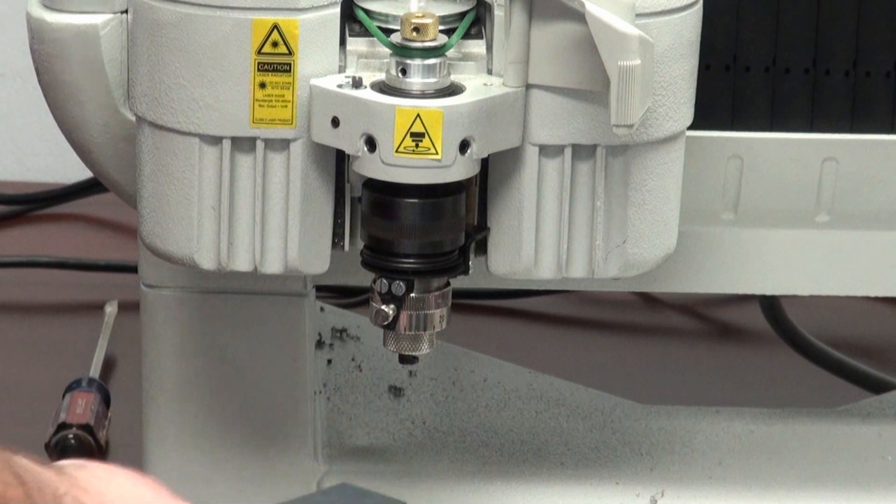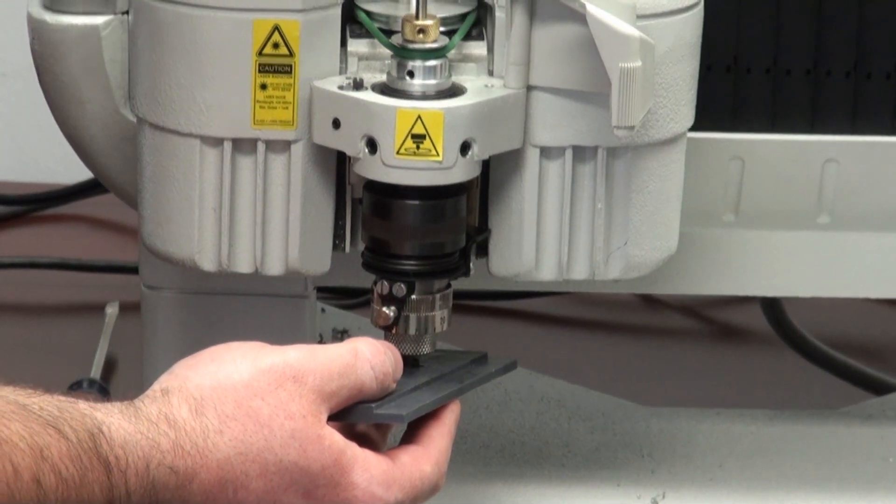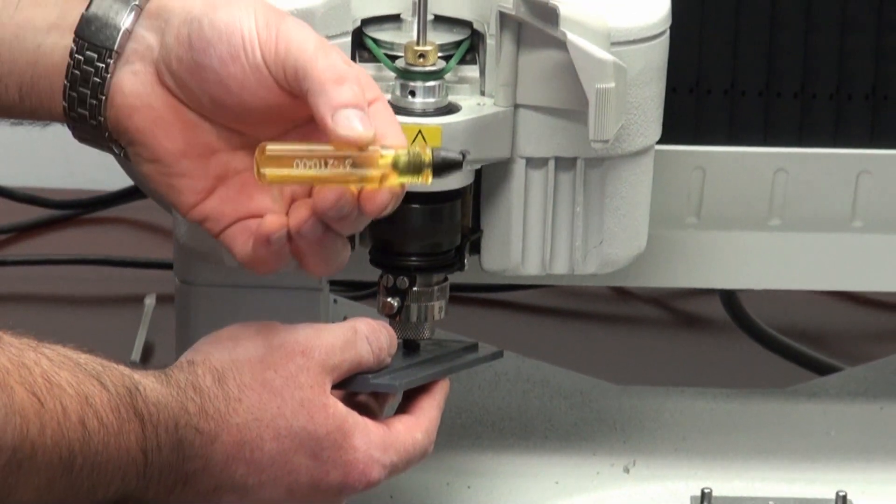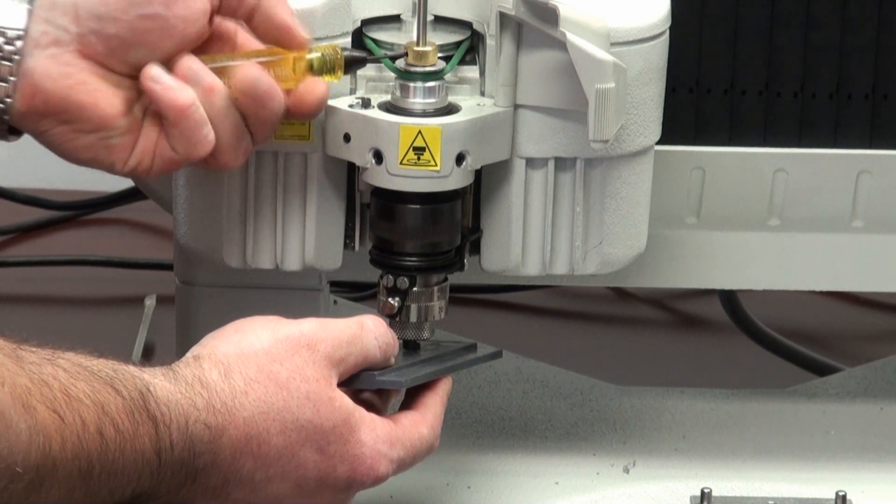You're going to take your hand and push it up against your nose cone. Go ahead and drop your cutter in. Then you're going to take your spline wrench and you're going to tighten the set screw down.